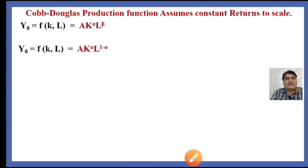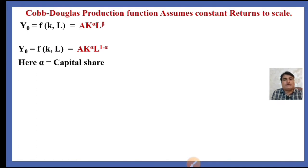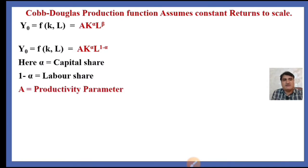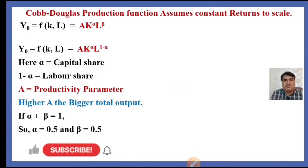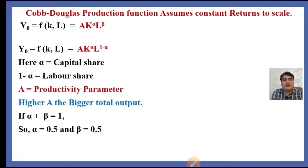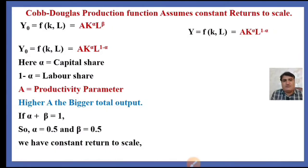We may rewrite it as y₀ = A * K^alpha * L^(1-alpha), where alpha represents the capital share and 1 minus alpha represents the labor share. A is the productivity parameter — the higher A, the bigger the total output. If alpha plus beta equals 1, we assume, for example, alpha = 0.5 and beta = 0.5, giving us constant returns to scale. It is not necessary that alpha must be 0.5 and beta 0.5; it can be 0.6 and 0.4, as long as they sum to 1.